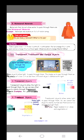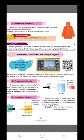Materials that do not allow water to pass through them are called waterproof materials. Examples of waterproof materials are raincoat, aluminum foil, and tablets.